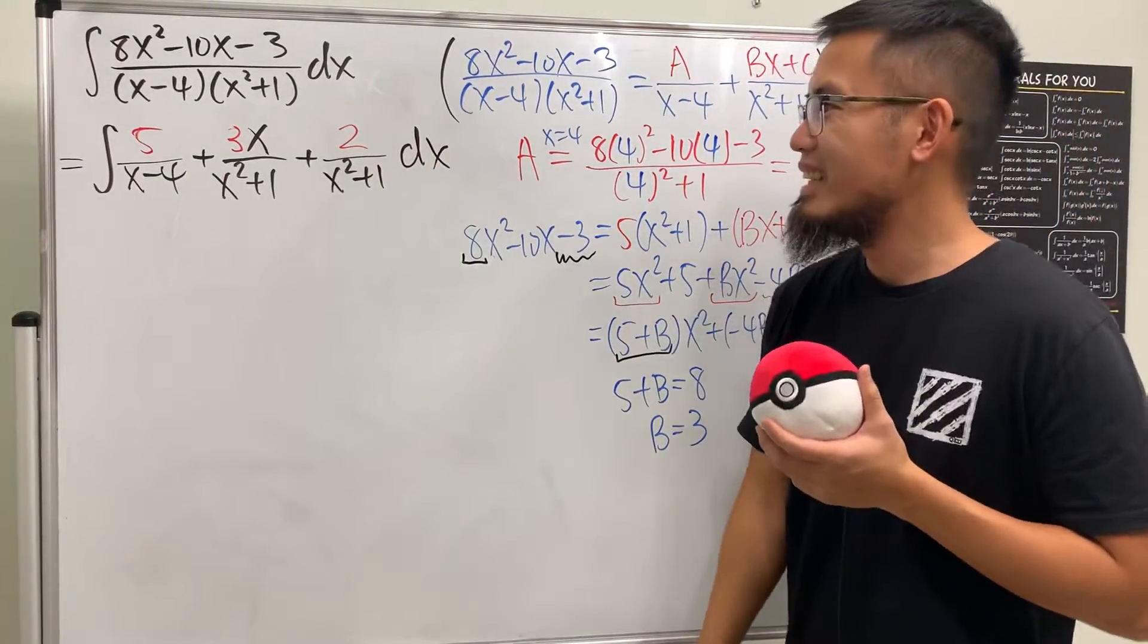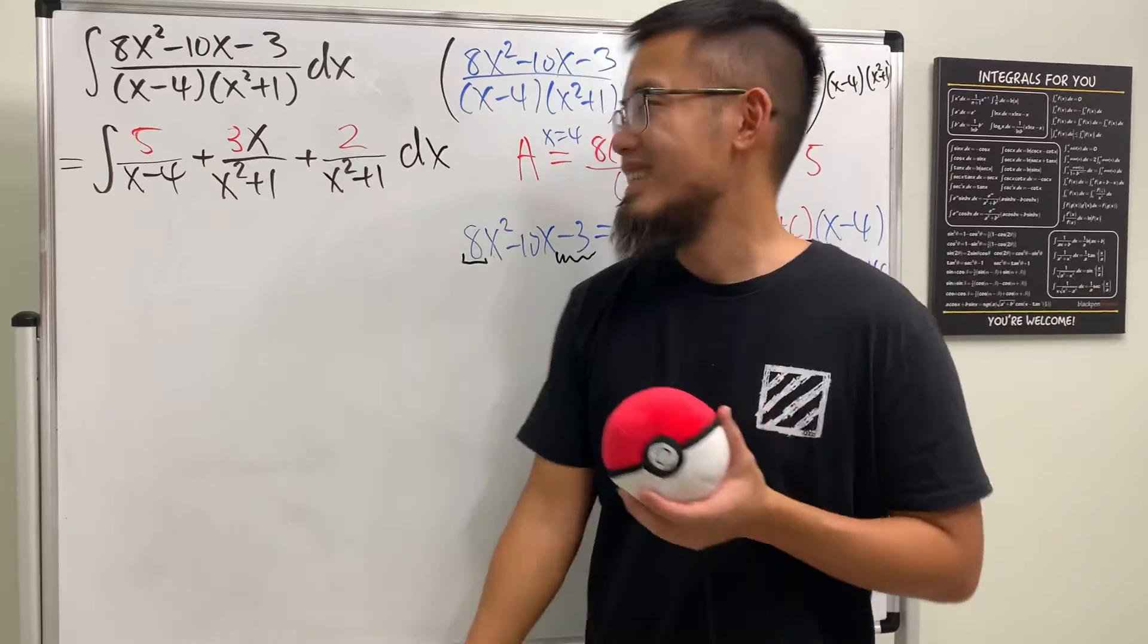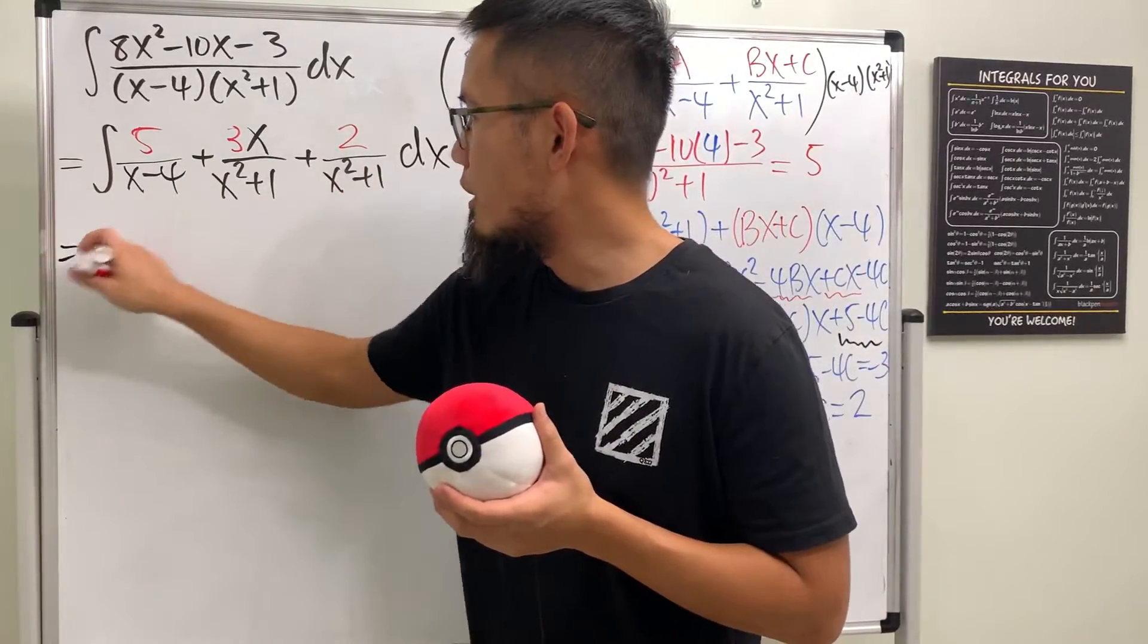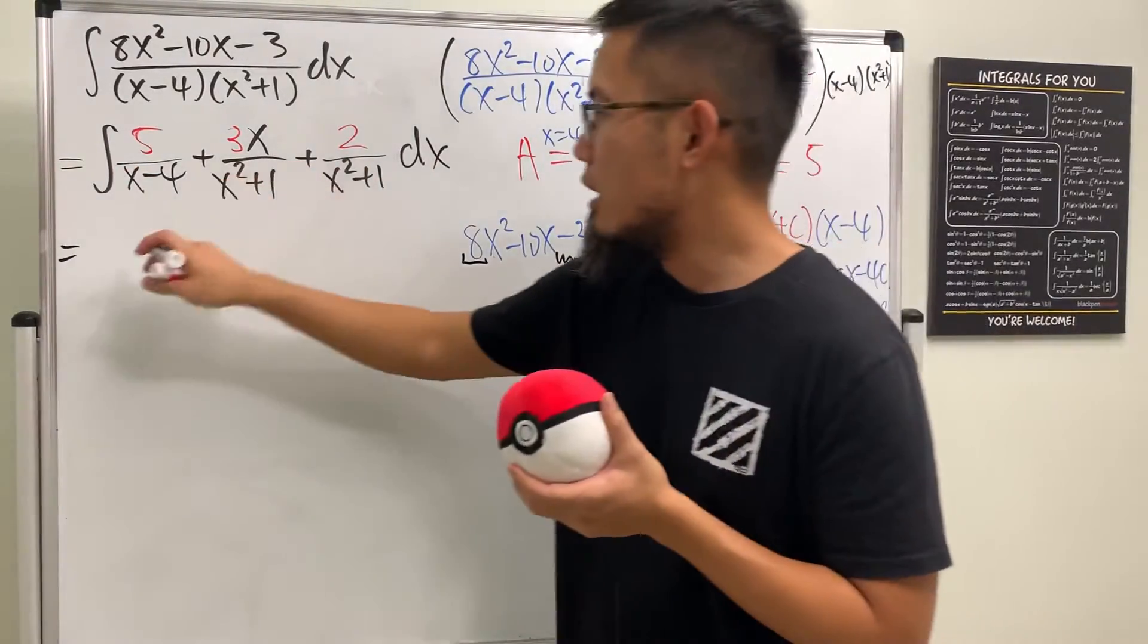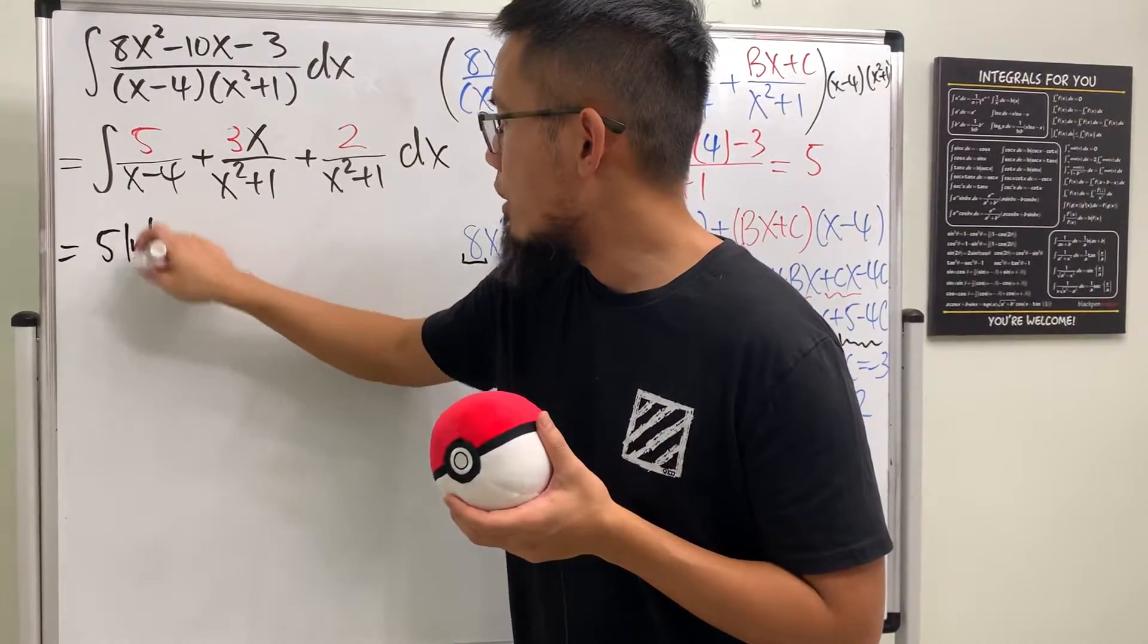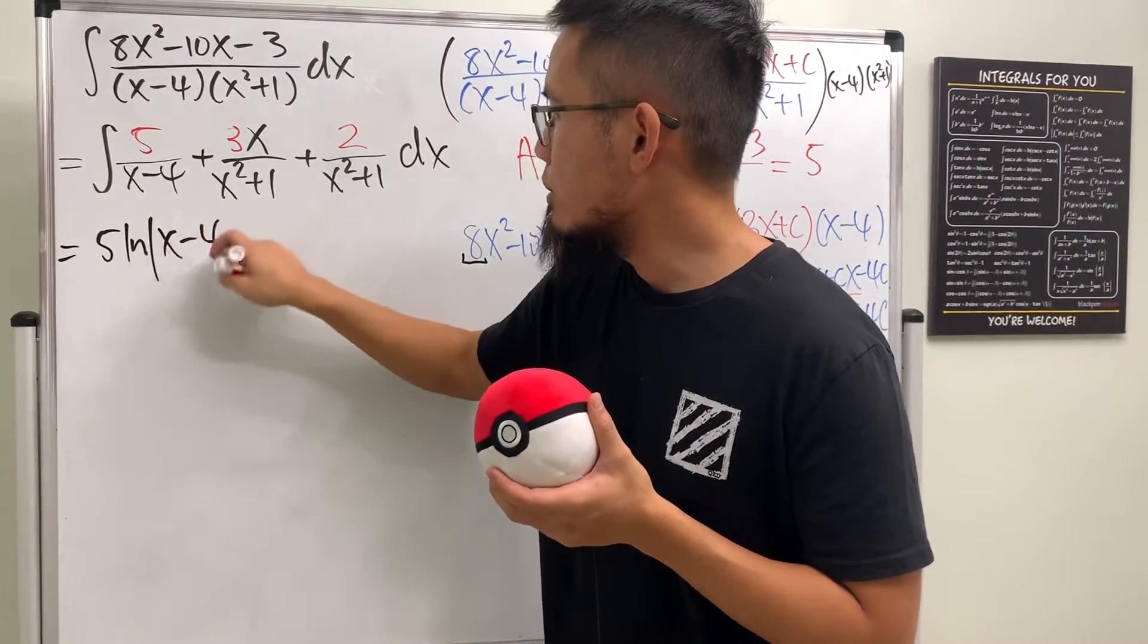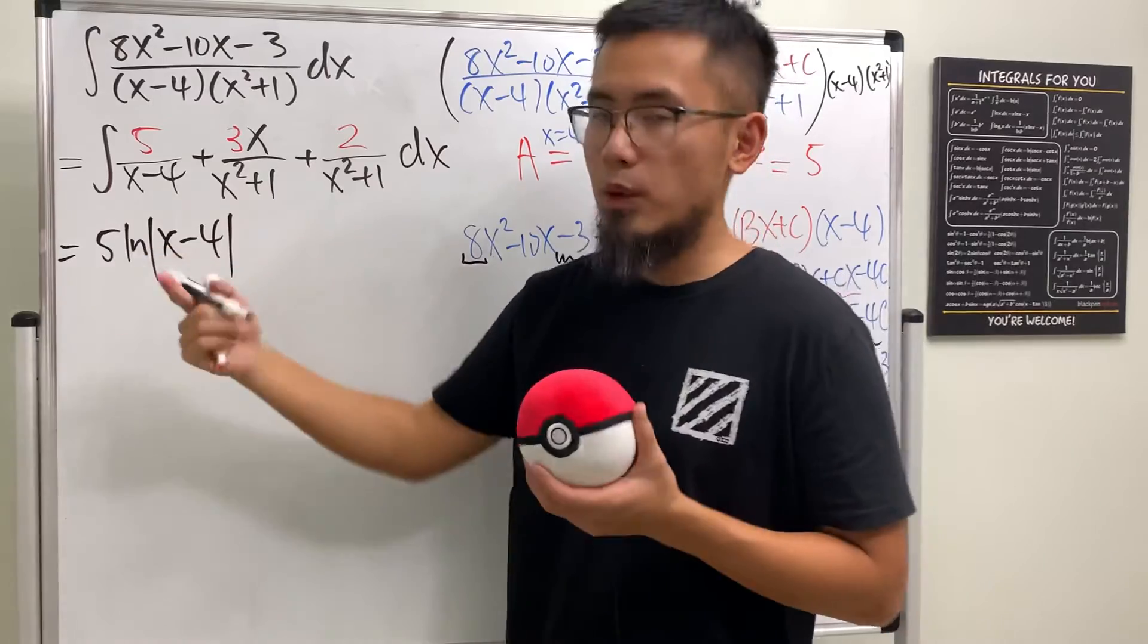We are ready to integrate. For the first one, 5 over a linear, we just get 5 ln|x - 4|, and notice that the derivative is just 1 so dividing by 1 doesn't really matter.